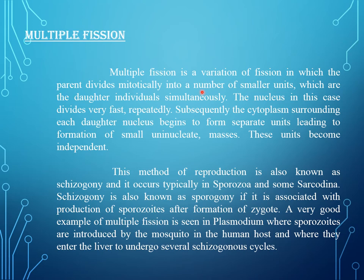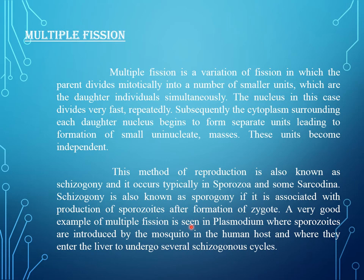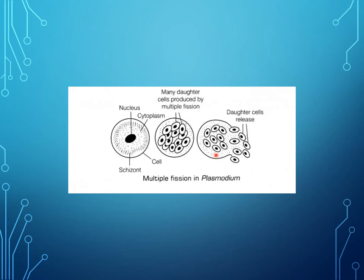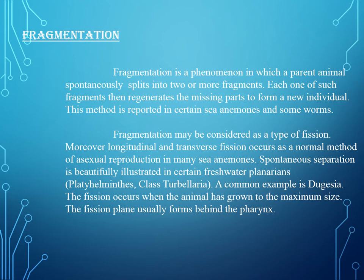Multiple fission is a variation of fission in which the parent divides mitotically into a number of smaller daughter individuals simultaneously. The nucleus in this case divides very fast, repeatedly. Subsequently, the cytoplasm surrounds each daughter nucleus to begin forming separate units, leading to formation of small uninucleate masses. These units become independent. This method of reproduction is also known as schizogony and it occurs typically in Sporozoa and some Sarcodina. Schizogony is also known as sporogony if associated with the production of sporozoites after formation of a zygote. A very good example of multiple fission is seen in Plasmodium, where sporozoites are introduced by the mosquito into the human host and enter the liver to undergo the overall schizogony cycle.